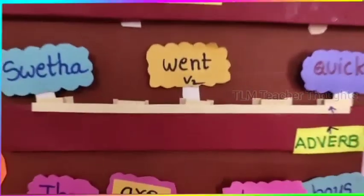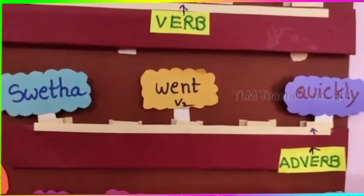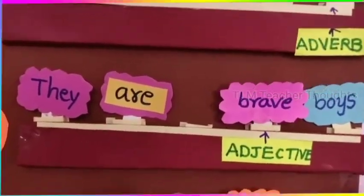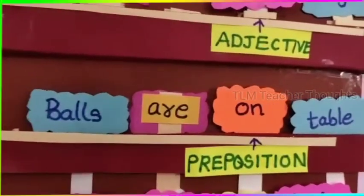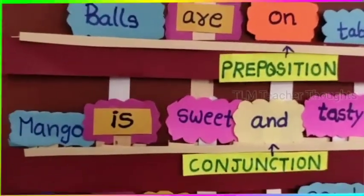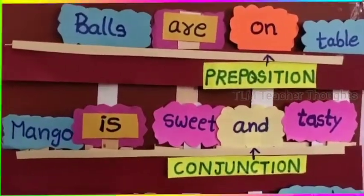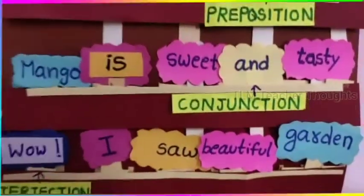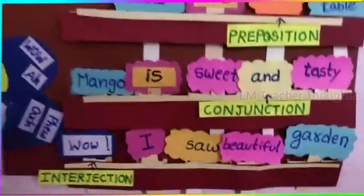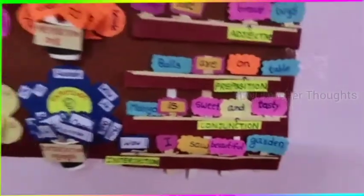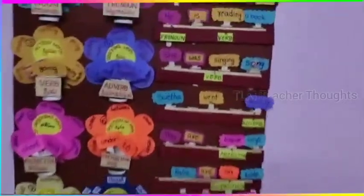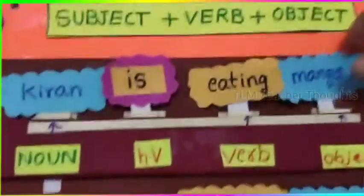So they can understand the usage of parts of speech in sentences — conjunction, interjection. Children will also participate actively; they make their own sentences with the help of the TLM board.